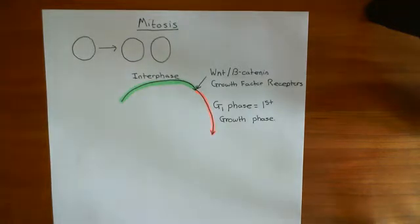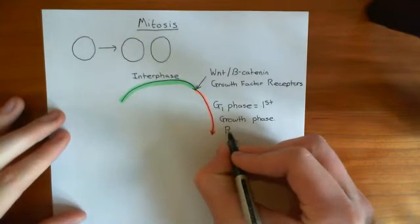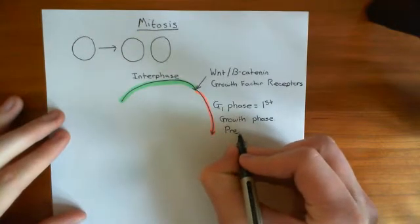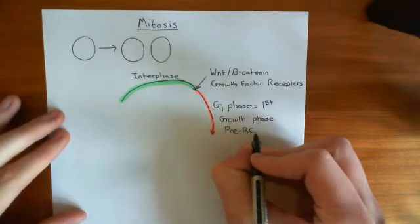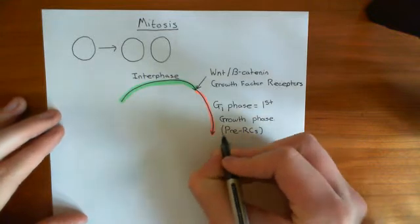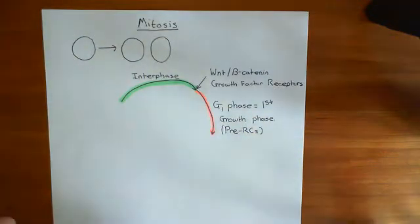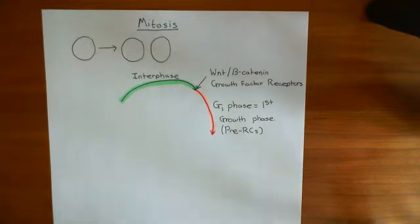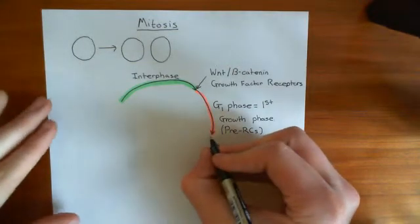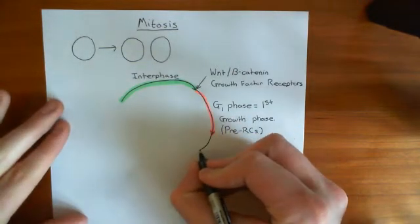In the G1 phase, the important thing happening at the DNA level is the assembly of pre-replication complexes, or pre-RCs, on the origins of replication. These protein complexes are set up ready for DNA polymerases to come and mount on them and begin the process of replication.